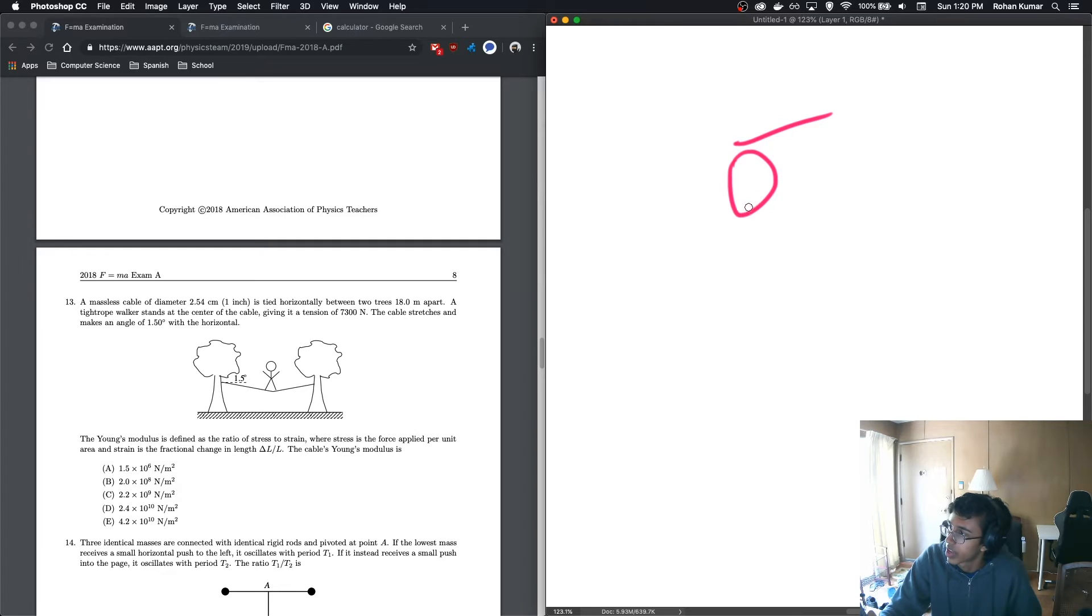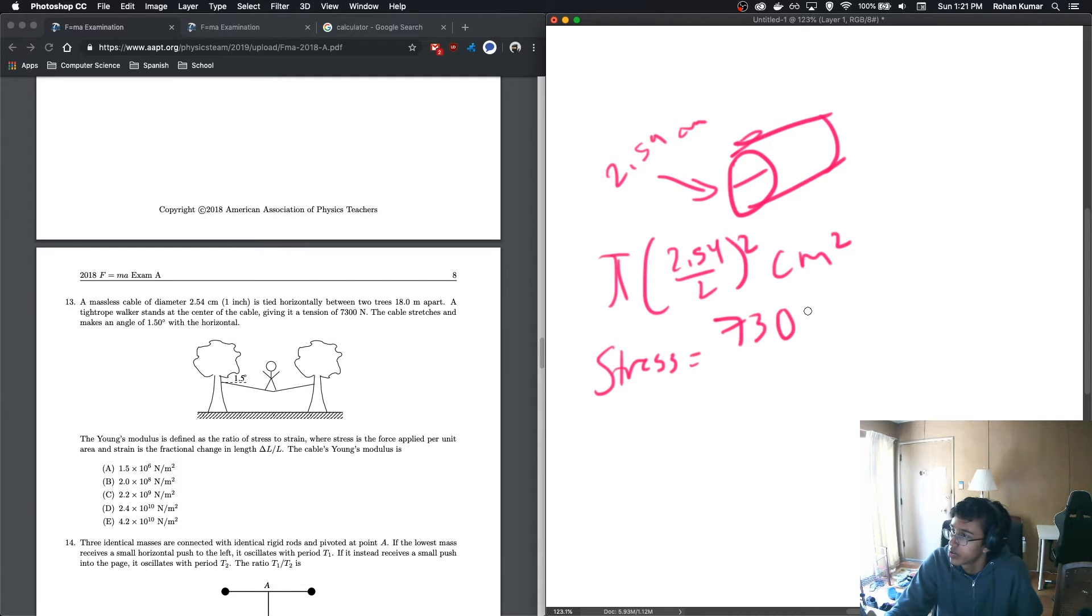So we basically have to find the force applied per unit area. So we have a cable. It looks like that. A nice little cylinder. And we know that the diameter is 2.54 centimeters. And that means that our area of this circle would be pi times 2.54 over 2 centimeters squared. And we want to find the force per unit area. And we know that the force is just 7,300 for every area. So that means that our stress is equal to 7,300 newtons over pi times, let's convert this to meters because that's easier, 0.0254 over 2 squared. And that should be our stress. And we'll calculate that later.